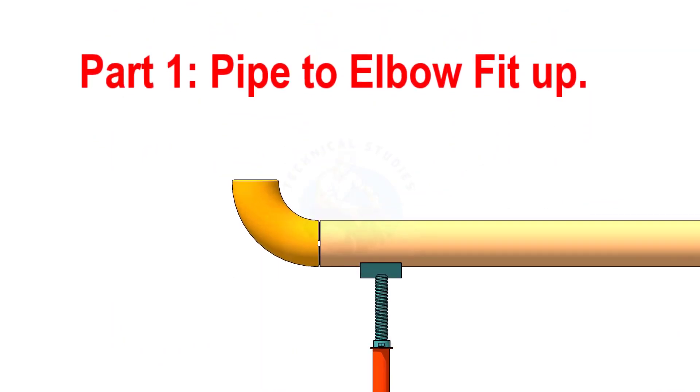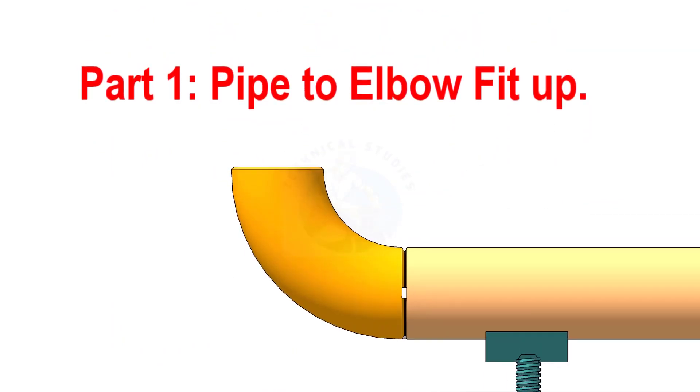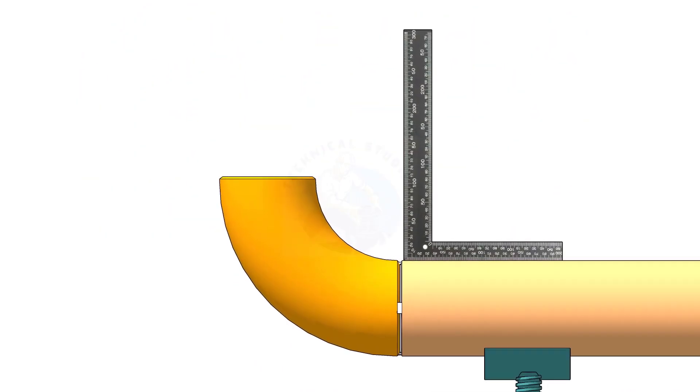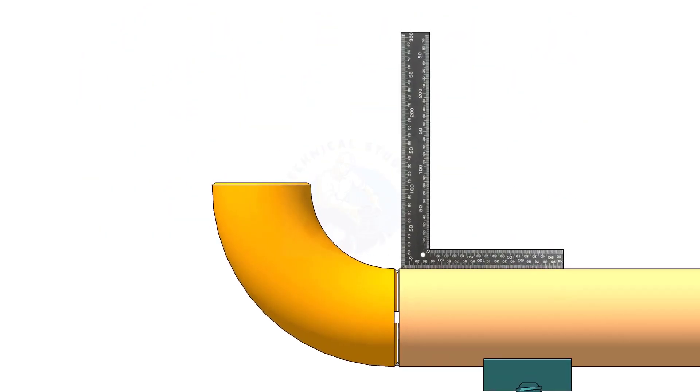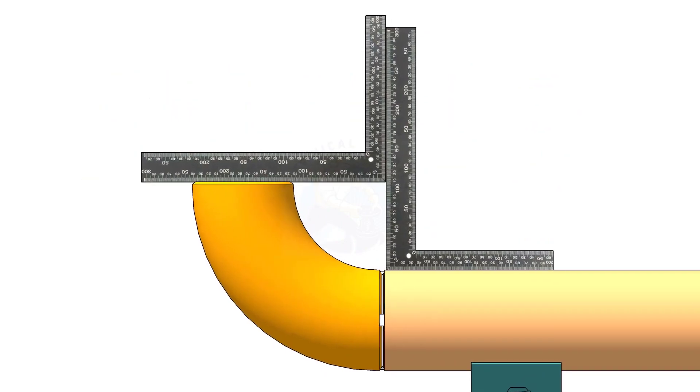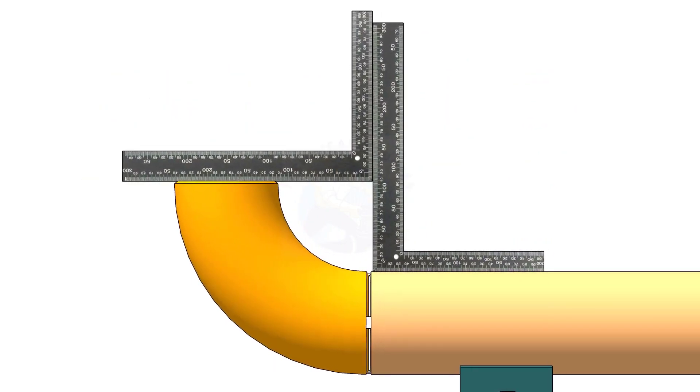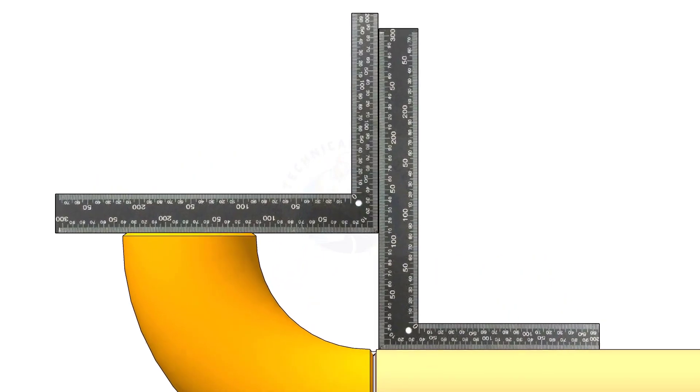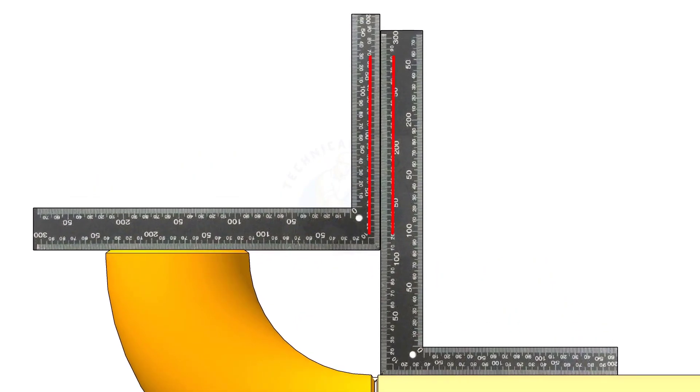There are different methods to check the fit up of an elbow to a pipe. One method is to hold right angles on the pipe and on the elbow, and check the gap. If the right angles are parallel, the fit up is correct.